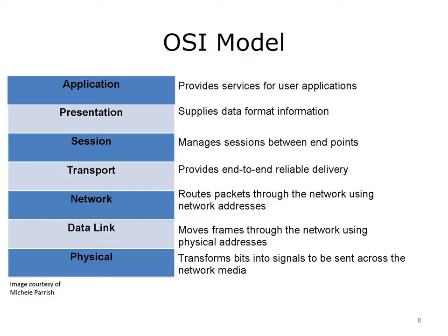The network layer uses network addresses — an example is IP addresses — to move packets across a network from source to destination. The data link layer uses physical or media access control, MAC addresses, to move data across the network. The physical layer transforms bits into signals, either electrical or optical, that are then sent across the network media.